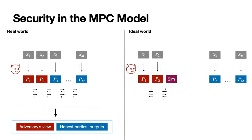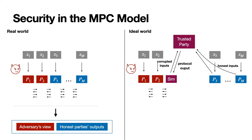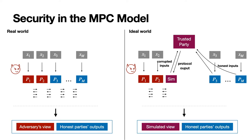How do we capture these requirements formally? A protocol is said to be secure if there exists a simulator which has no direct access to the honest parties, and instead only learns the protocol output, and is still able to generate a simulated view of the adversary along with a simulated distribution of the honest party's outputs that is computationally indistinguishable from a real-world execution of the protocol. It turns out that, at least in a syntactical sense, this definition adapts to the MPC setting with minimal changes.